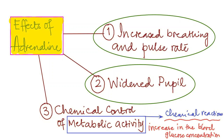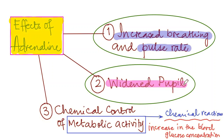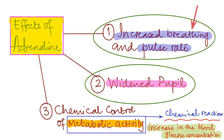To recap the effects of adrenaline: increased adrenaline causes increased breathing and pulse rate, widened pupils, and increased metabolic activity leading to higher blood glucose. Increased breathing supplies more oxygen to muscles; increased pulse rate supplies more blood and glucose; widened pupils enhance vision; and more blood glucose provides an energy boost — all preparing the person for the emergency situation.